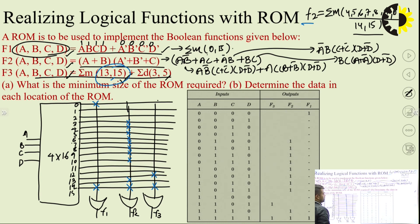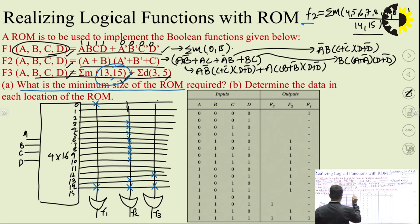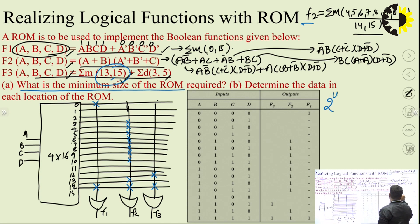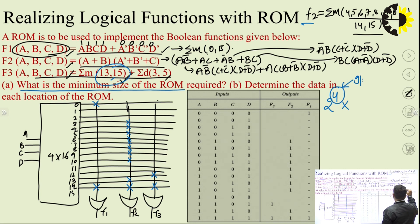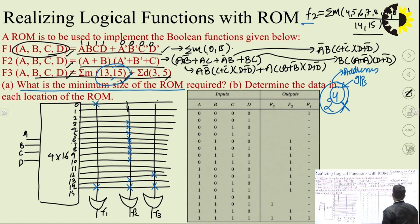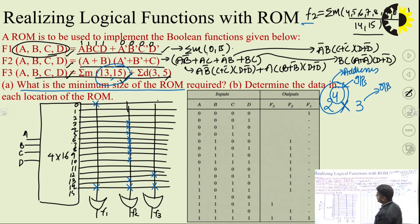This completes the system design using ROM. The minimum size of the ROM is 2^4 × 3, meaning 16 addresses (from 4 input lines) with 3 output bits per address. This is the circuit realization using ROM.